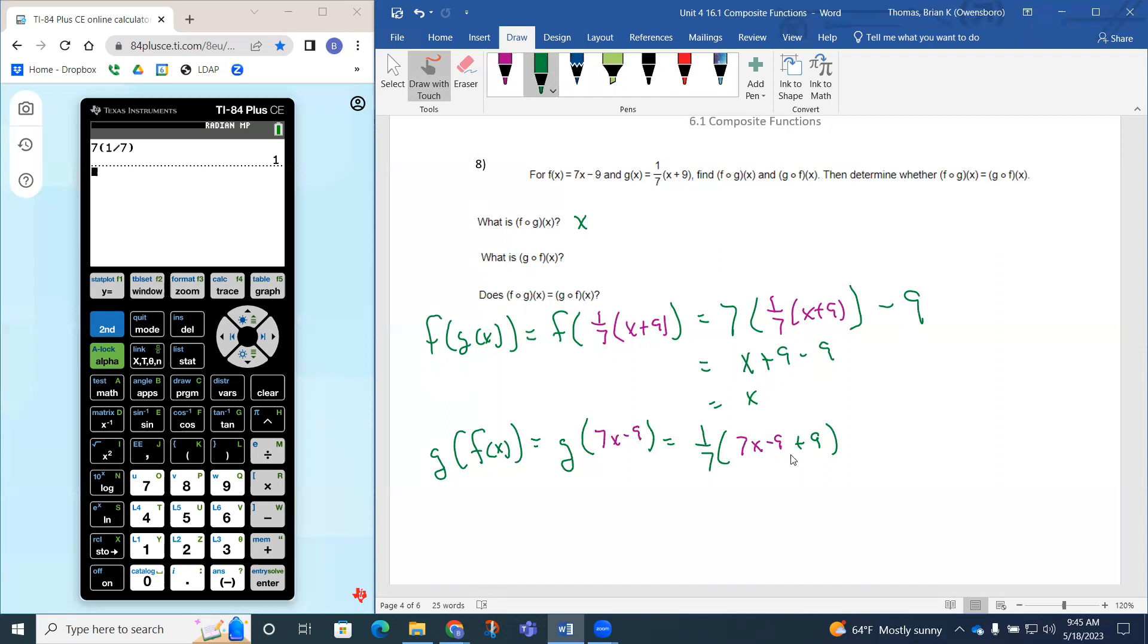So on this one, we probably need to do what's inside the parenthesis first. So notice how the 9s will divide out. I'm going to divide out, zero out. Negative 9 plus 9 is going to be zero.